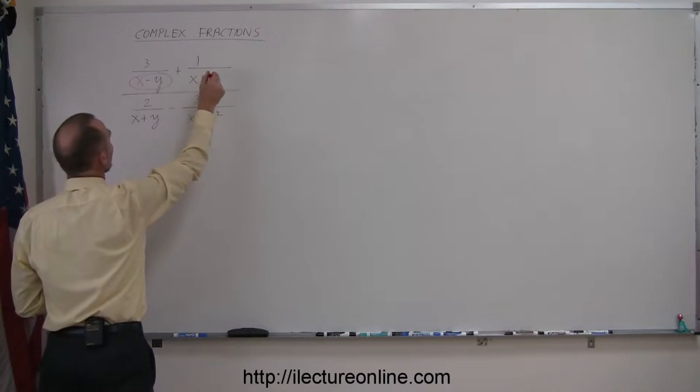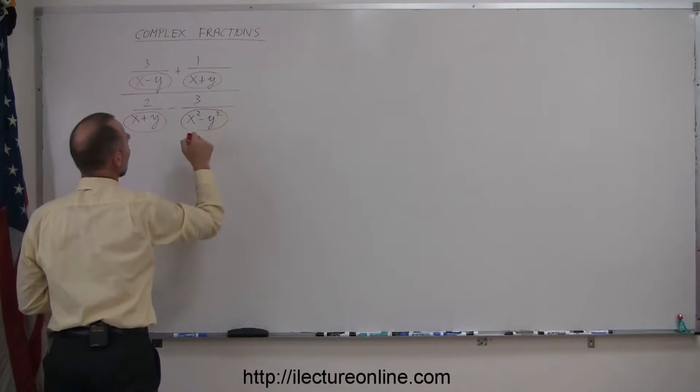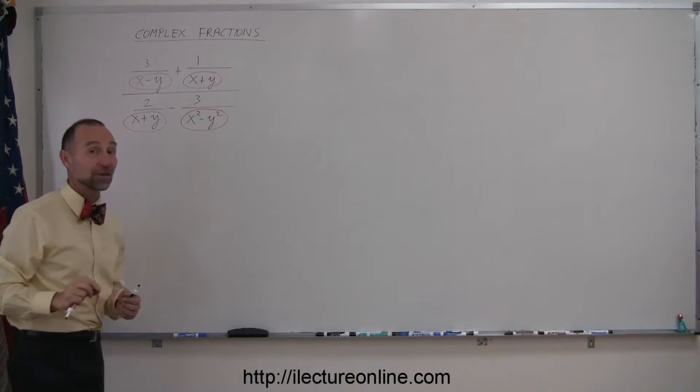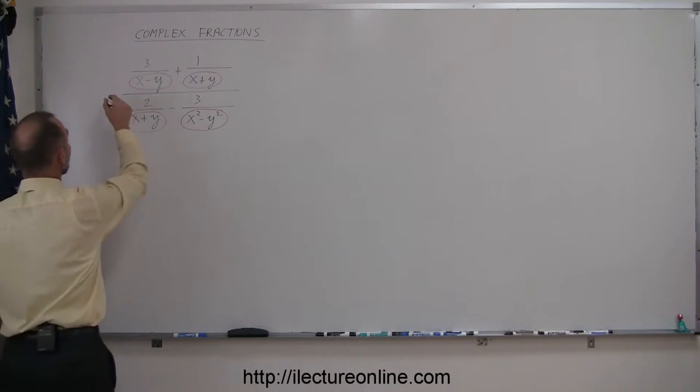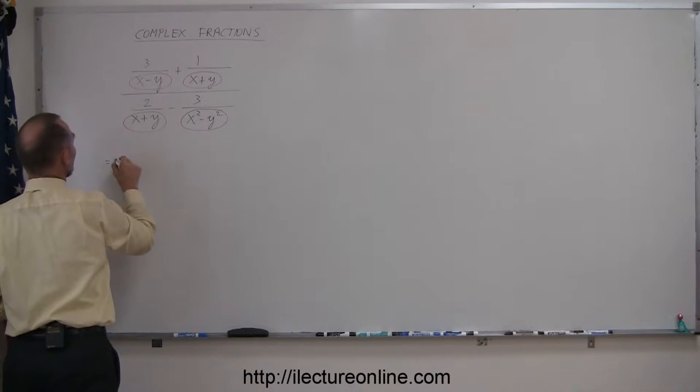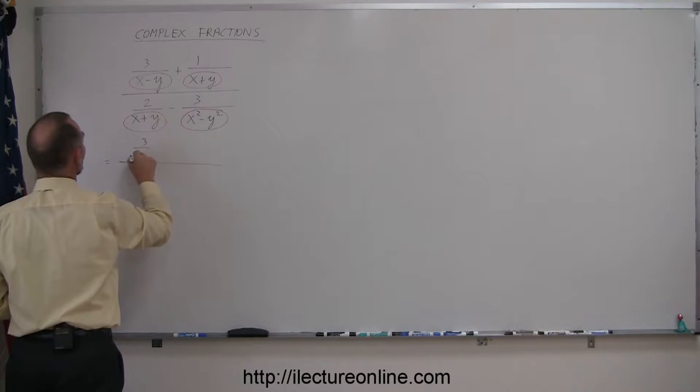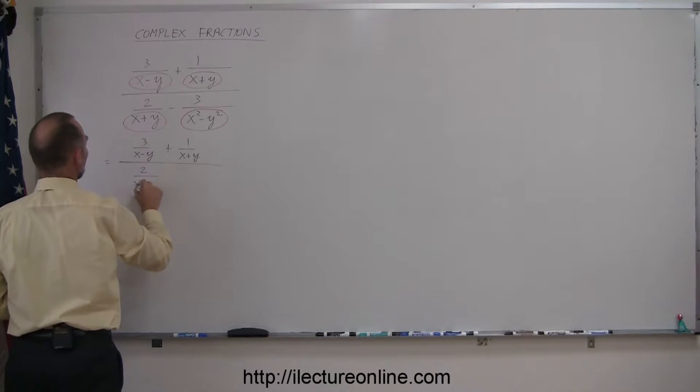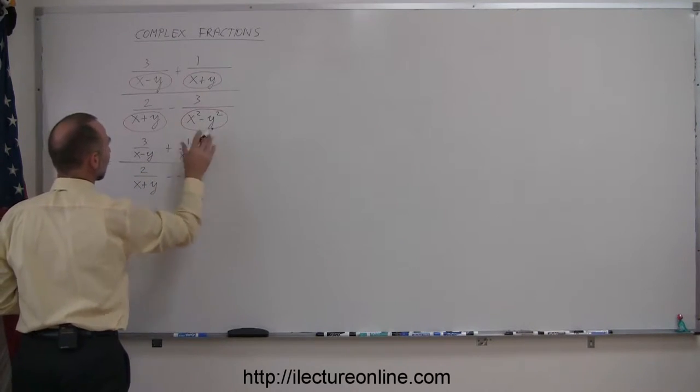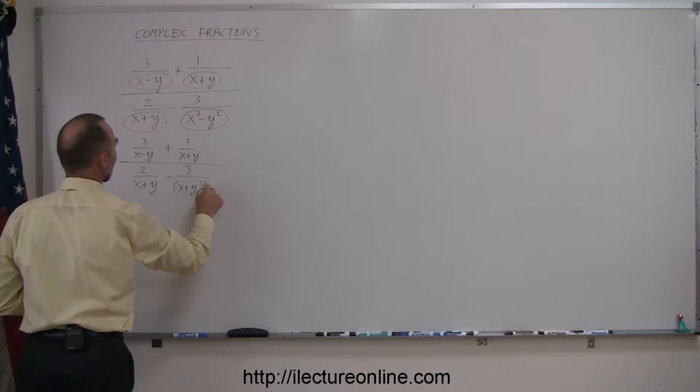Here's the x minus y, the x plus y, x plus y, and here we have x squared minus y squared. Right away I recognize that there's a difference of squares, which means I can probably factor that. Let's go ahead and rewrite this fraction then, so this is equal to: here we have 3 over x minus y, plus 1 over x plus y, divided by 2 over x plus y, and minus 3 over, when I factor this it becomes x plus y, times x minus y.